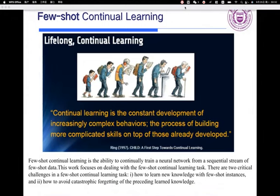Firstly, let me introduce what is Few-Shot Continual Learning. Few-Shot Continual Learning is the ability to train a neural network from a sequential stream of Few-Shot data. This work focuses on dealing with the Few-Shot Continual Learning task.